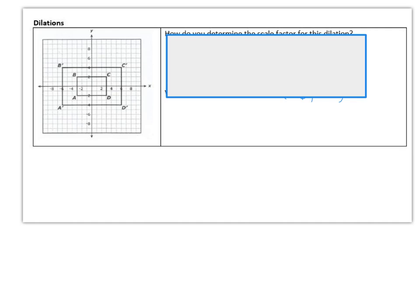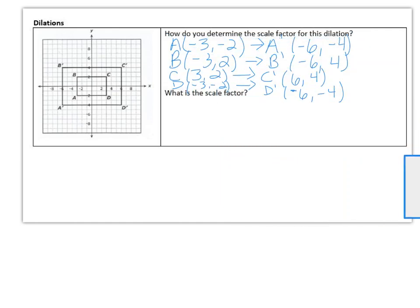On this next dilation, here are the points that we see from both shapes and so if you look closely at those points you would notice that everything was multiplied by 2 so the scale factor is 2.